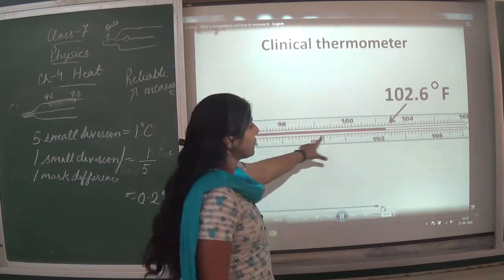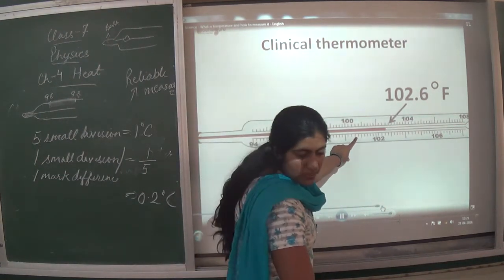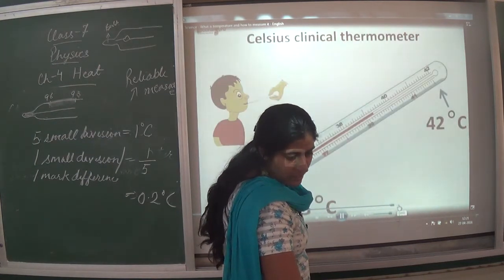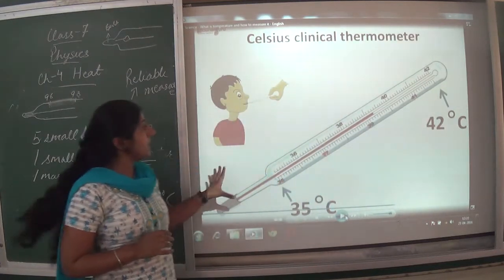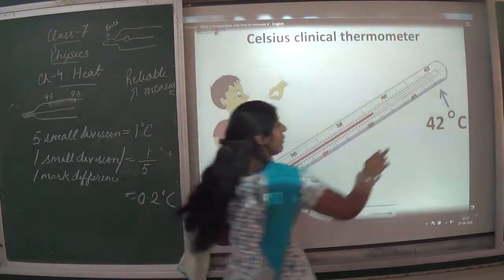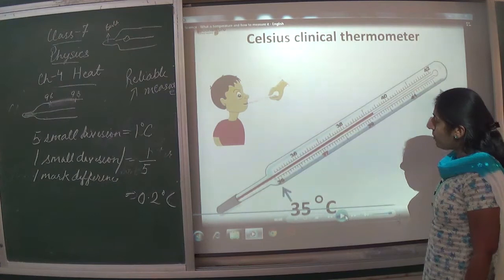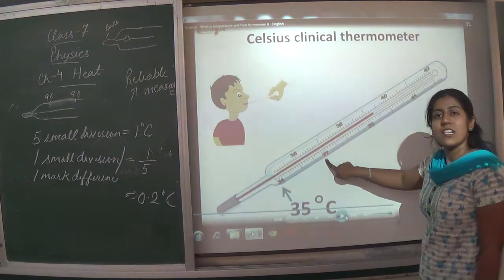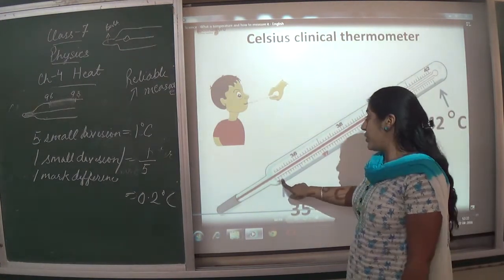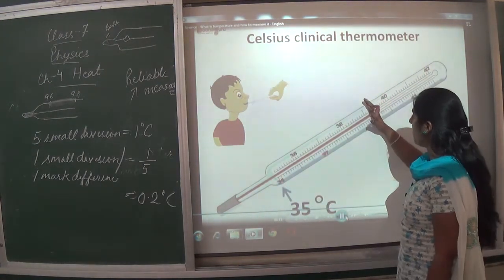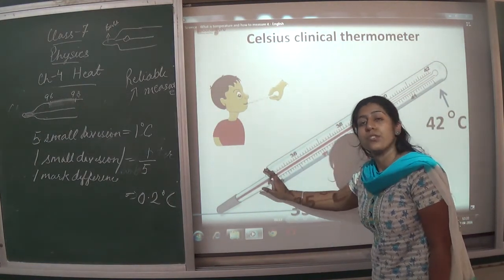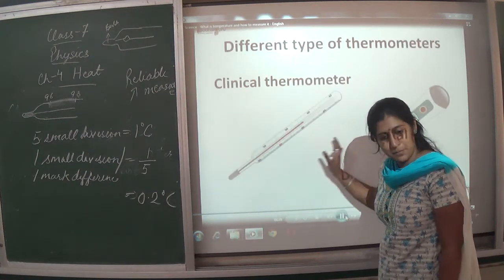The clinical thermometer measures temperature — in this example, 102°F. The range is from 35 degree Celsius to 42 degree Celsius. The normal human body temperature is 37 degree Celsius. Before measuring, the mercury should be at 35°C so that we get the exact and correct measurement.